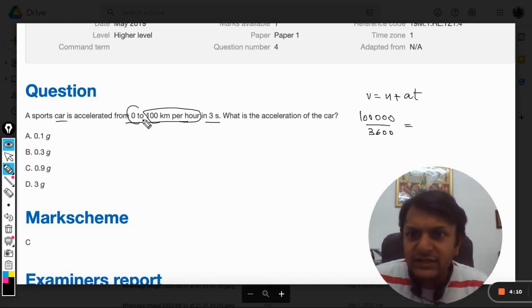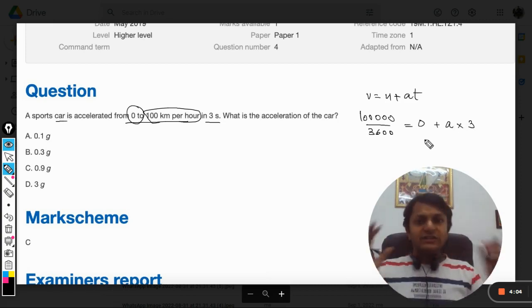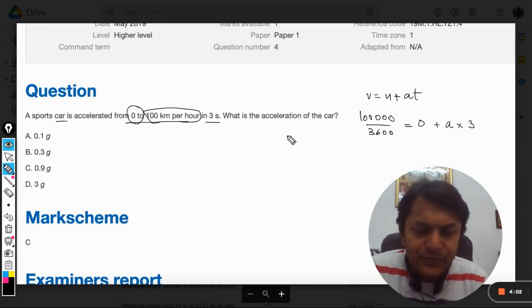And the car has started from rest, so u is zero. Acceleration we need to find, and how much time it has taken, three seconds. So we substitute three here. From here we will find the acceleration.